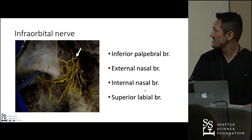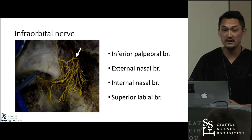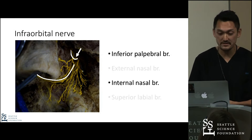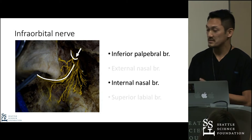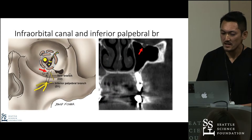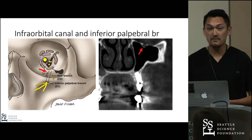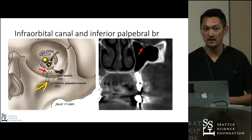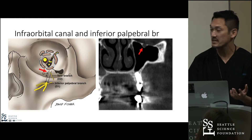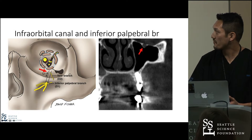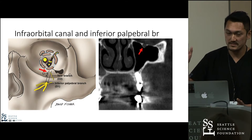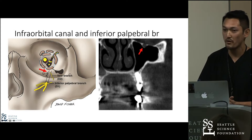The superior labial branch. The arrow shows the position of the infraorbital foramen. These two are the inferior palpebral branch and internal nasal branch. The inferior palpebral branch innervates the lower eyelid, and the internal nasal branch innervates the nasal septum or some mucosa of the nose. This schematic drawing shows the anatomy of the infraorbital canal, which is the pathway of the infraorbital nerve. The dotted line shows the infraorbital canal in the maxilla, and this is the foramen. These are all branches of the infraorbital nerve. The red arrow indicates the infraorbital canal.